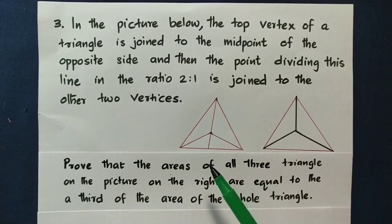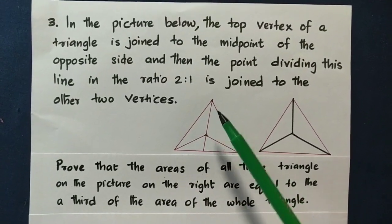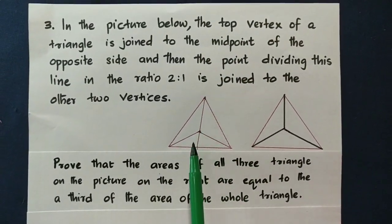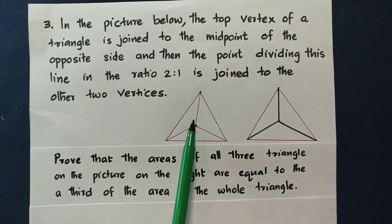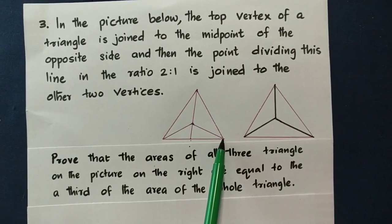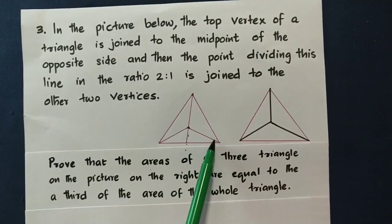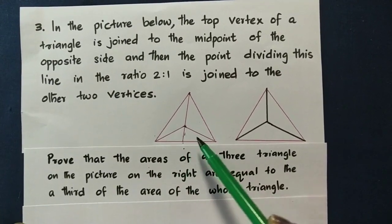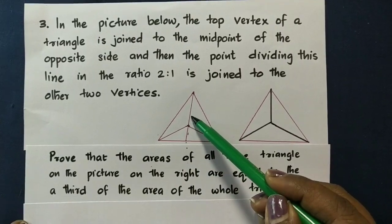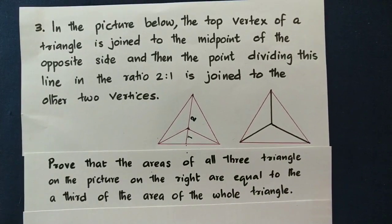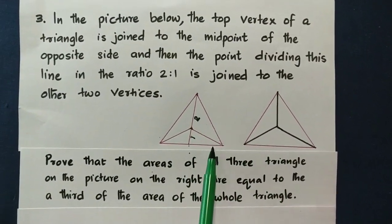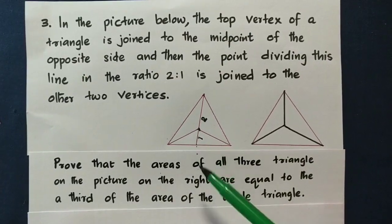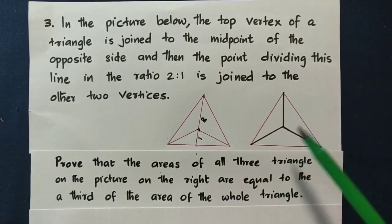If you have a picture of this video, it says that it is the opposite side to the midpoint. If you have a line with the vertex, two is to one — the two portions to one portion. If we divide it, there is a triangle.